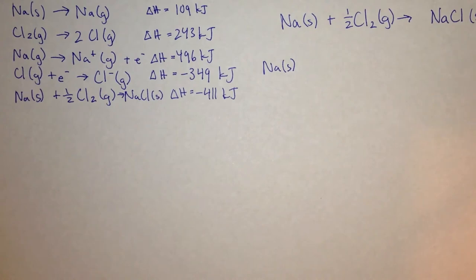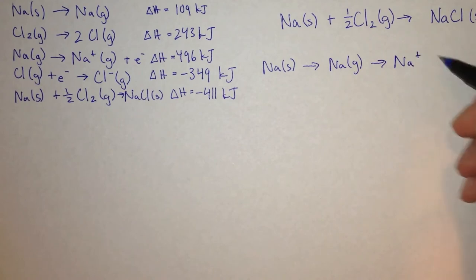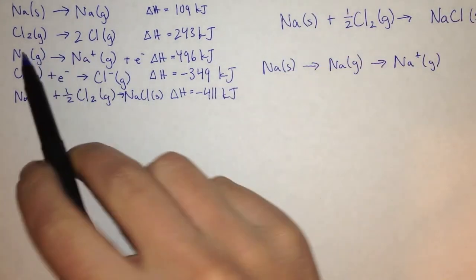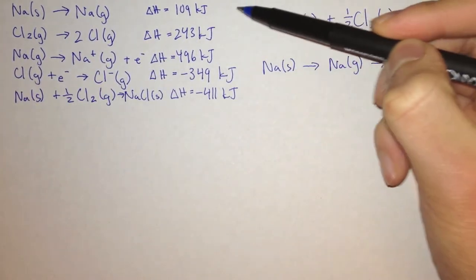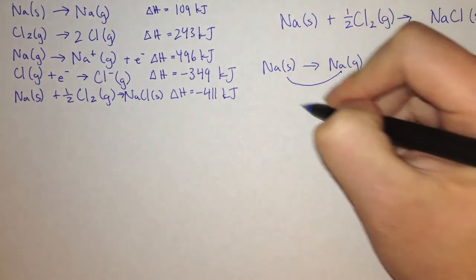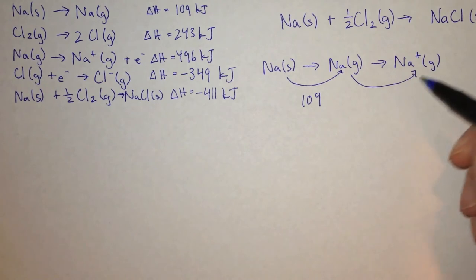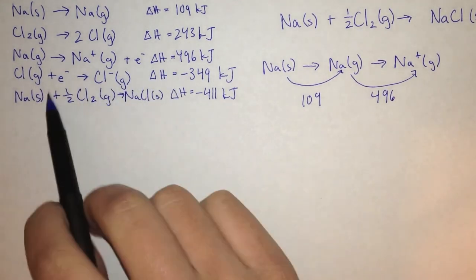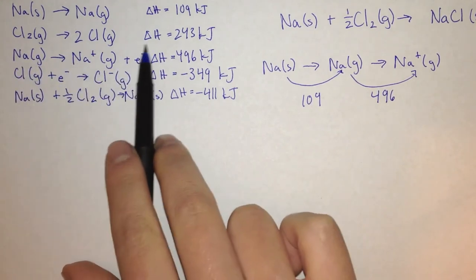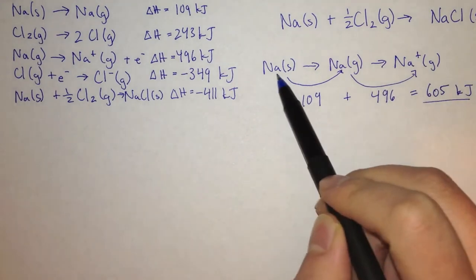Let's look at the sodium first. We start out with solid sodium and first we have to make it into a gas, and then we have to take one of its electrons away. Usually equations will be given, and you will be able to know the heats of each equation. Going from solid sodium to gaseous sodium is 109 kJ, and going from a gas to an ion is 496 kJ. So we had the sodium, and one electron was taken away from it, making it positive. The total heat for this process is 605 kJ — the heat of formation of a gaseous sodium ion from solid sodium.